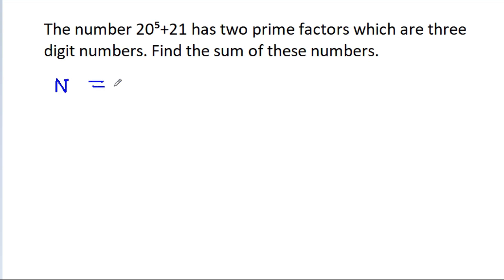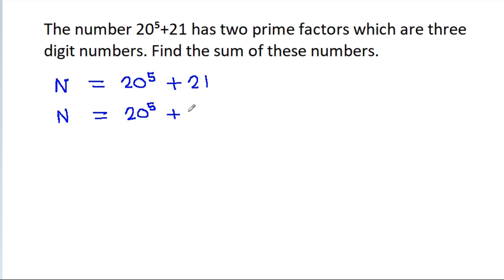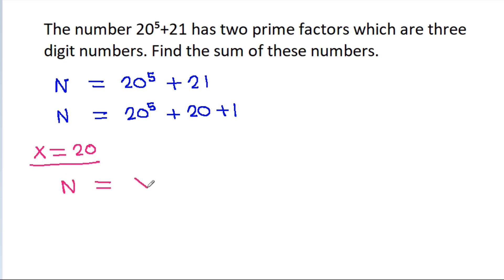Suppose n is equal to 20 to the power 5 plus 21. Then n is equal to 20 to the power 5 plus 20 plus 1. Now suppose x is equal to 20. Then n will be equal to x to the power 5 plus x plus 1.